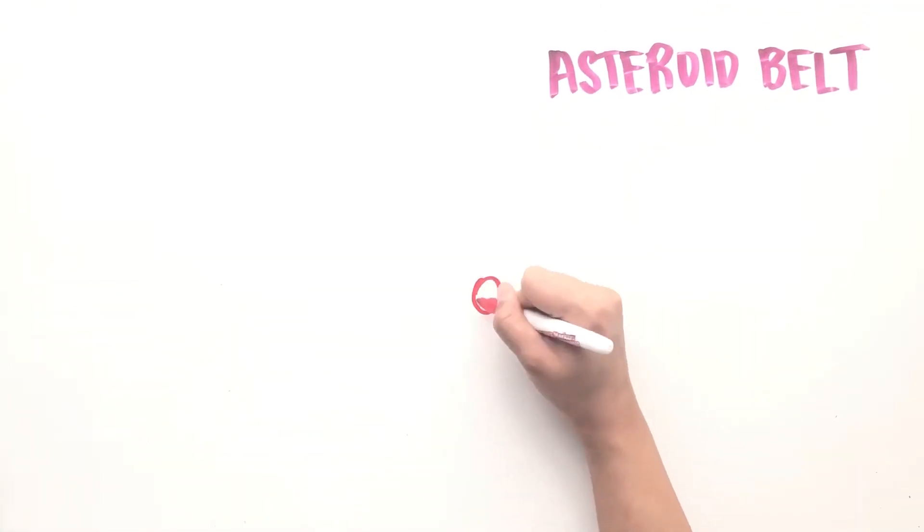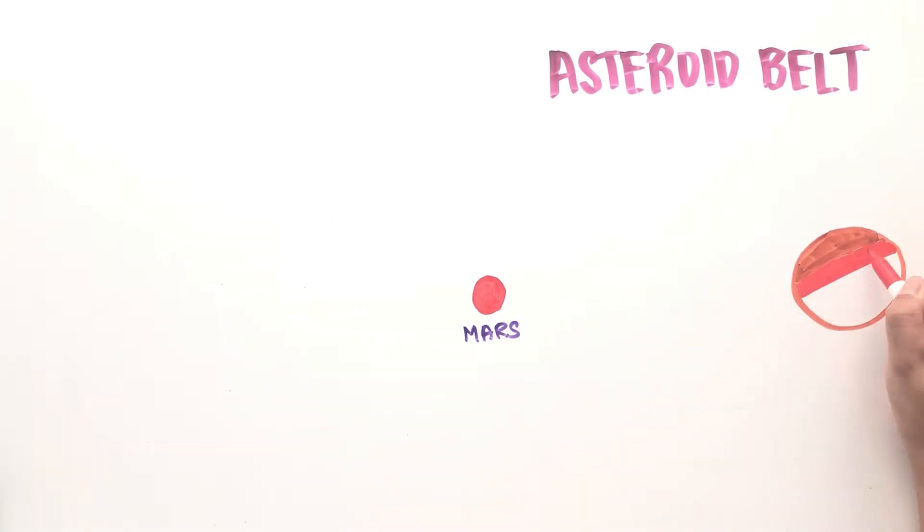Most are found in the asteroid belt and have an irregular shape because they are too small and don't have enough gravitational pull to become a sphere.